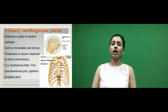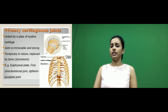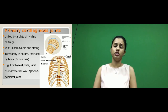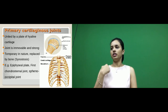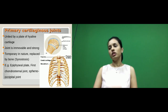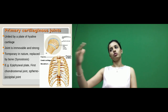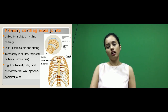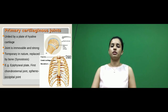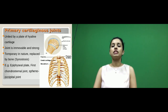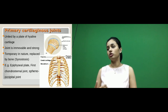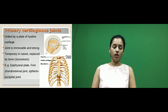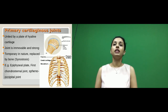Primary cartilaginous joints can also be seen at the first chondrosternal joint, between the first rib and the sternum, where it is initially cartilaginous and slowly replaced by bone. Another example is between the sphenoid and the occipital bone, called the spheno-occipital joint. These are the examples classified under primary cartilaginous joints.